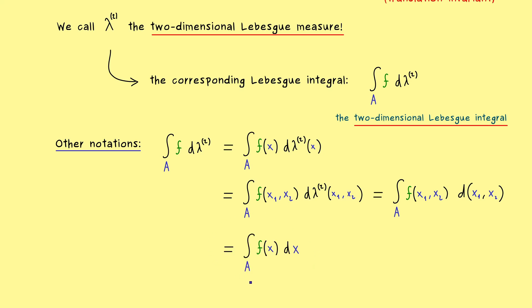However, then it looks exactly like our one-dimensional Lebesgue integral. So it could lead to some confusion. Therefore, if you want to avoid that, you can also just put the dimension here to the d. But of course, in the end everything should be clear, if you know the function f and the subset a.